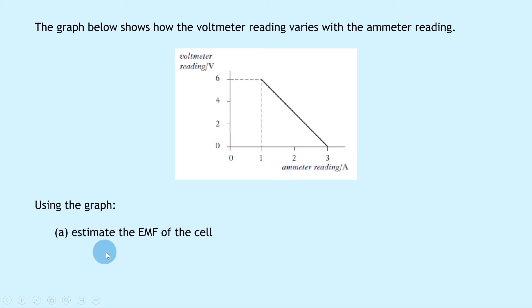It then says using the graph for part a, estimate the EMF of the cell. So notice this word estimate suggests that there's going to be a wee bit of leeway in the answer, and that's because in order to find the EMF, remember EMF is the y-axis intercept, so in order to find the y-axis intercept I need to extend this line back to the y-axis.